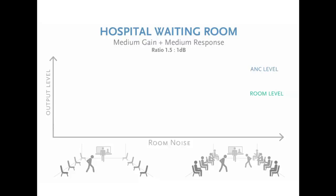Here are a few demonstrations showing how an acoustic space can benefit from ANC. In these examples we have a graph that shows the system's output level in relation to the noise in the room. The first example shows a hospital waiting room. On the left, the waiting room only has a few people, which only requires a low volume in the room.